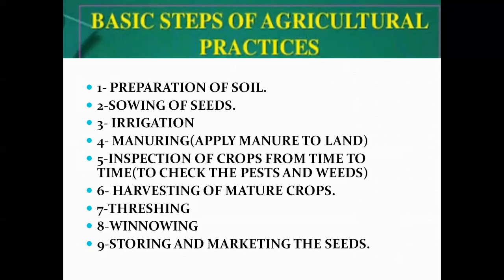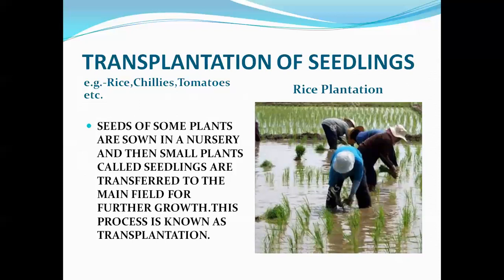Some plants are grown differently. Proper spacing is a major factor for plantation, because it ensures the uniform availability of water, nutrients, and sunlight to the plants. For that, farmers use a unique technique called transplantation. In this case, seeds are first sown in a nursery, and then small plants called seedlings are transferred to the main field for further growth — like tomatoes, chillies, etc.